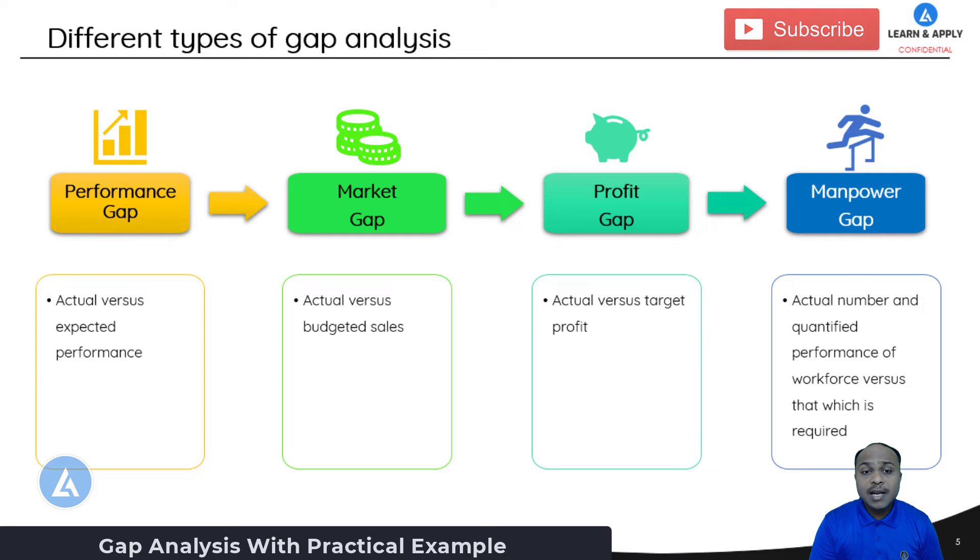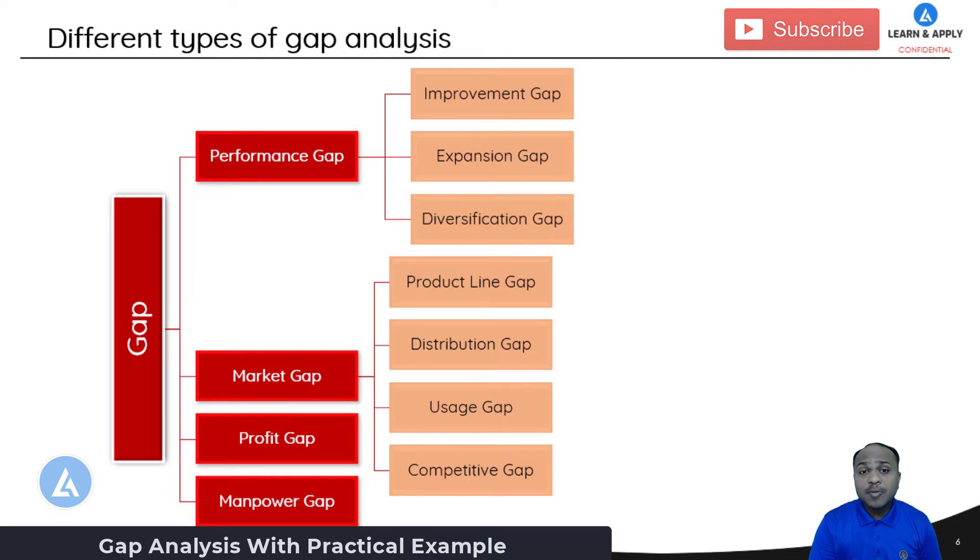Now the performance gap and market gap can be divided into other sub-parts. Performance gap has other three types like improvement gap. As the name indicates, it is talking about what is the improvement that you have planned against what is the improvement that you have gained. The other types are expansion gap and diversification gap. There are also more types of market gaps like product line gap, distribution gap, usage gap, and competitive gap.